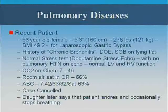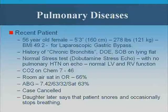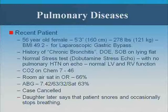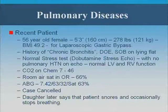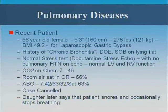I want to tell you about a patient who really surprised me — an outpatient presenting for elective bariatric surgery. She's 56 years old, 5'3", 278 pounds, BMI 49, with a history of chronic bronchitis. She gets dyspnea on exertion and gets short of breath lying flat, like almost every bariatric surgery patient. Her stress test was normal with normal LV and RV function. Her pre-op CO2 was 46, which I actually didn't see before she went to the OR — the resident told me everything was okay.